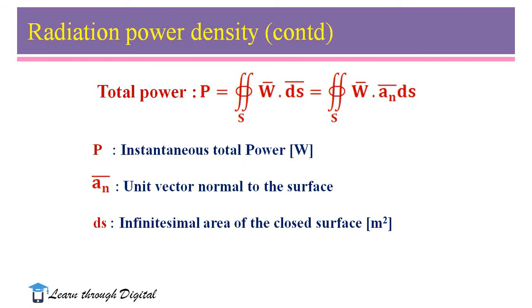For instantaneous power, it is obtained by integrating over a closed surface: P instantaneous equals the surface integral of W vector dot ds vector. The Poynting vector or radiation power density is integrated over a closed surface that is normal to the direction of radiation. Here, P is the instantaneous total power in watts, â_n is the unit vector normal to the surface, and ds is the differential surface element of the closed surface in square meters.